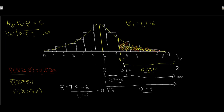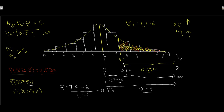Our normal approximation gives 19.22%, compared to the exact binomial value of 19.38%. That's quite close for an approximation. The bigger the value of n — and consequently the larger np and nq are — the more exact this approximation becomes.